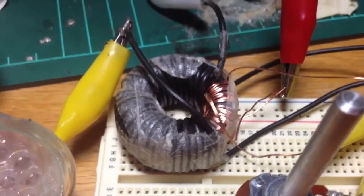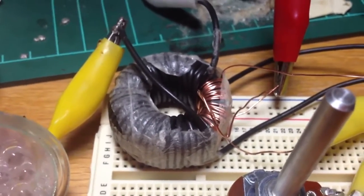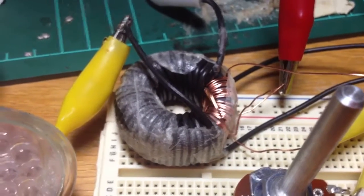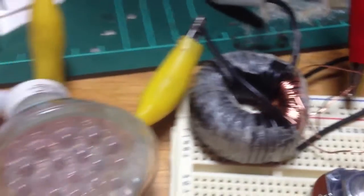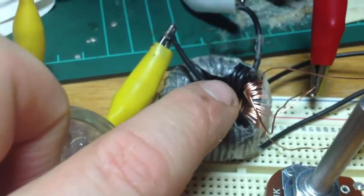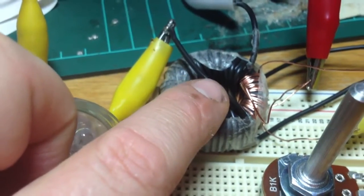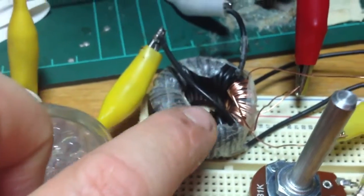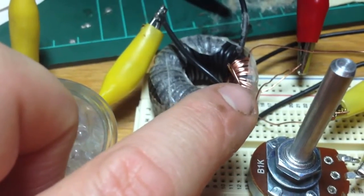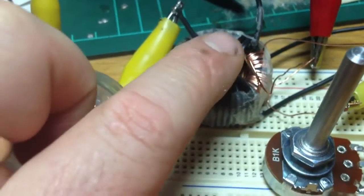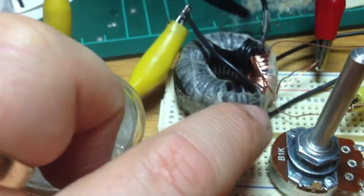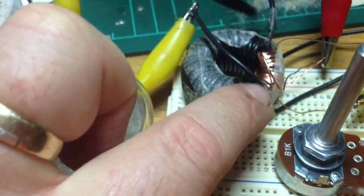We've got a ferrite toroid here. We've got 20 turns either side of this multi-strand 0.12mm wire. There's two winds of 20 each. I've wound them back over each other so both the ends come out at the start.